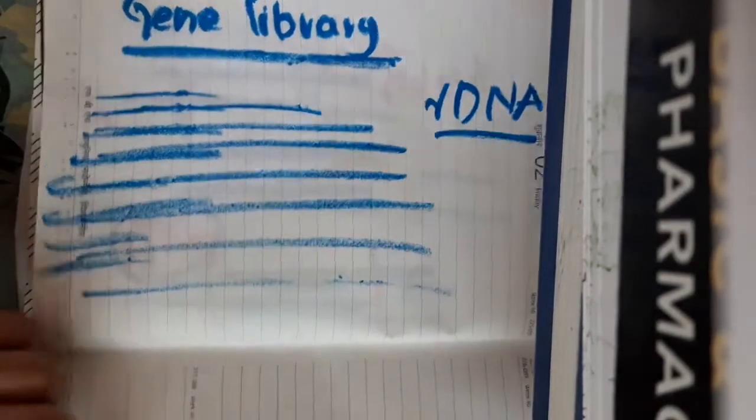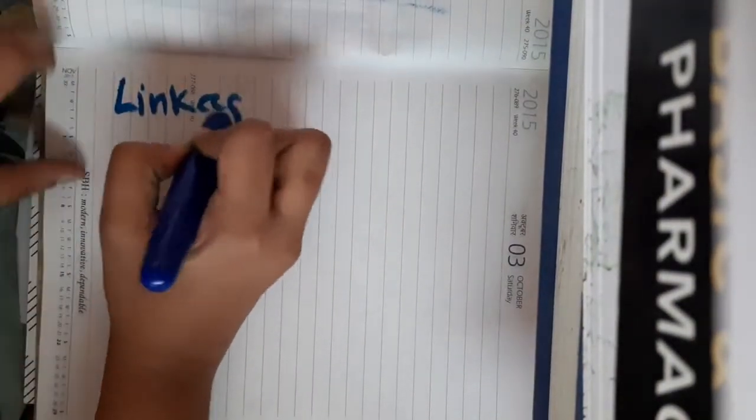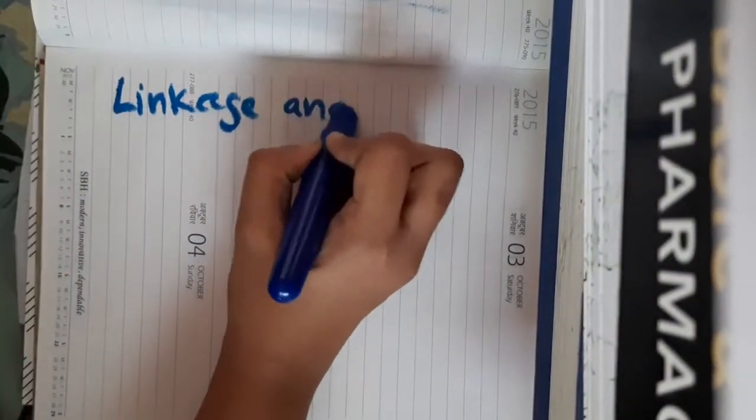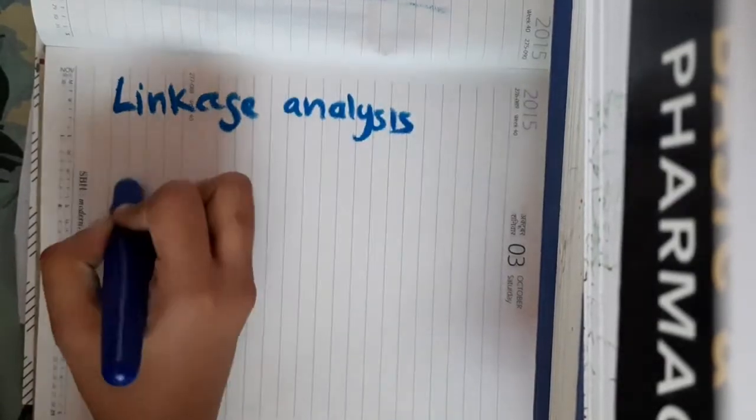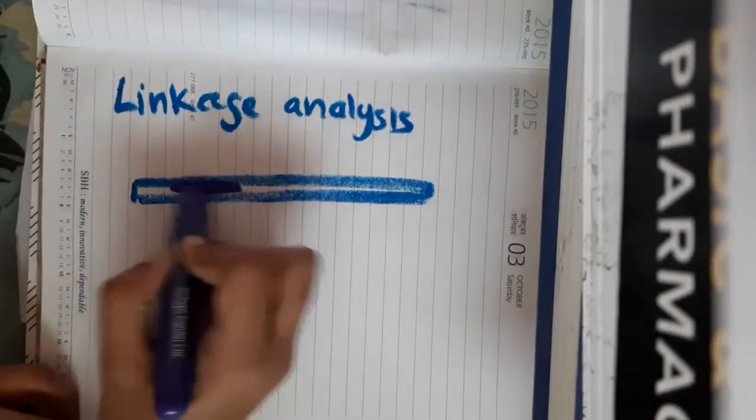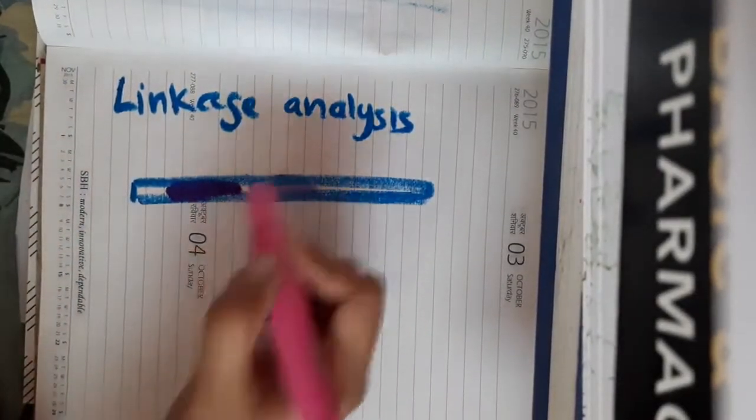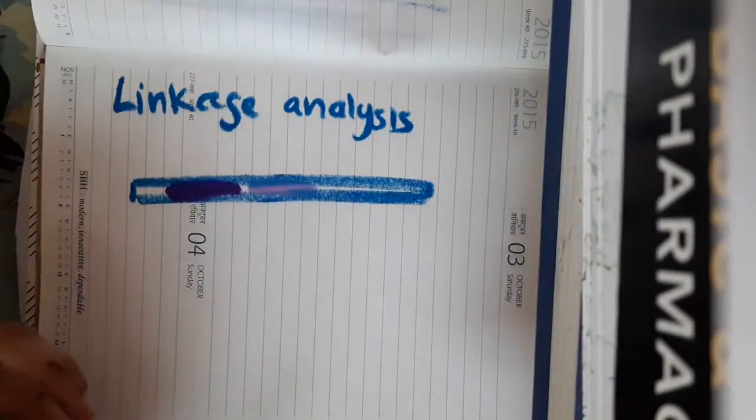Then along with this gene library, the next word is about linkage analysis. If this is the DNA and if this DNA has two genes, think that this is one gene, this is the second gene.